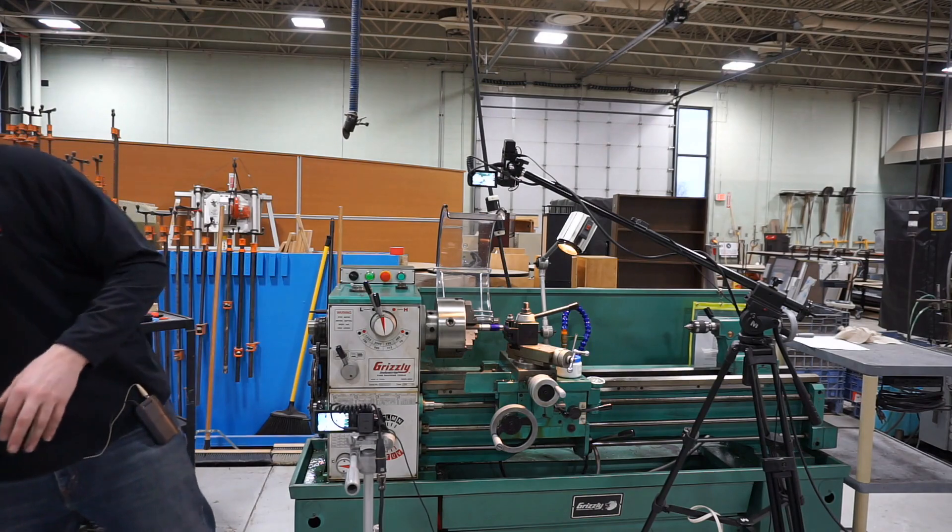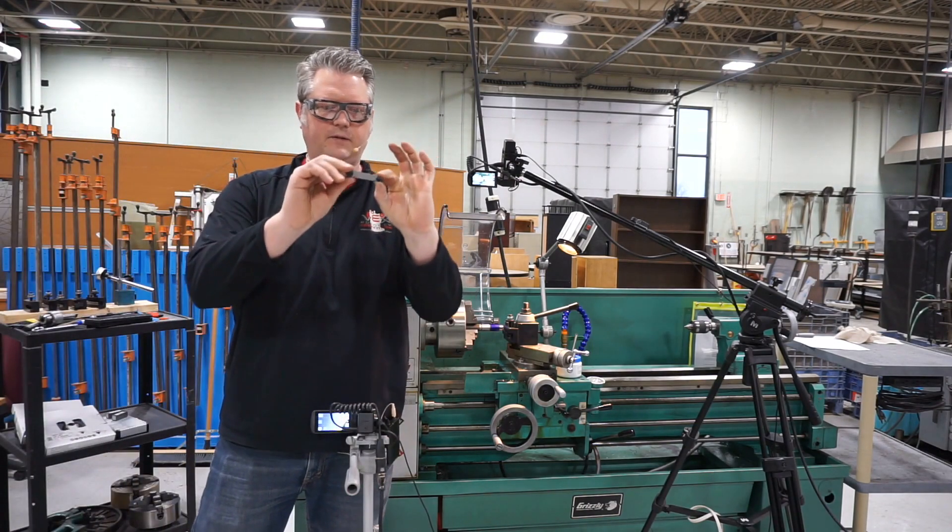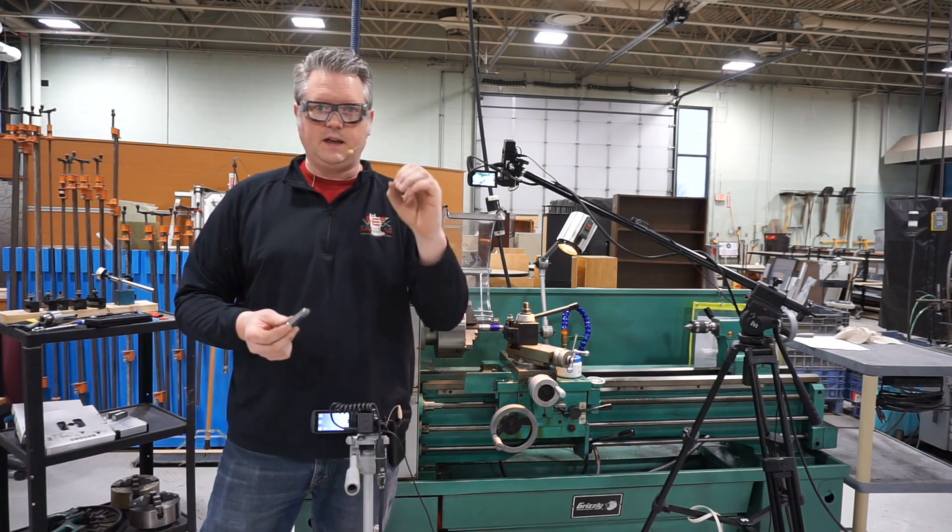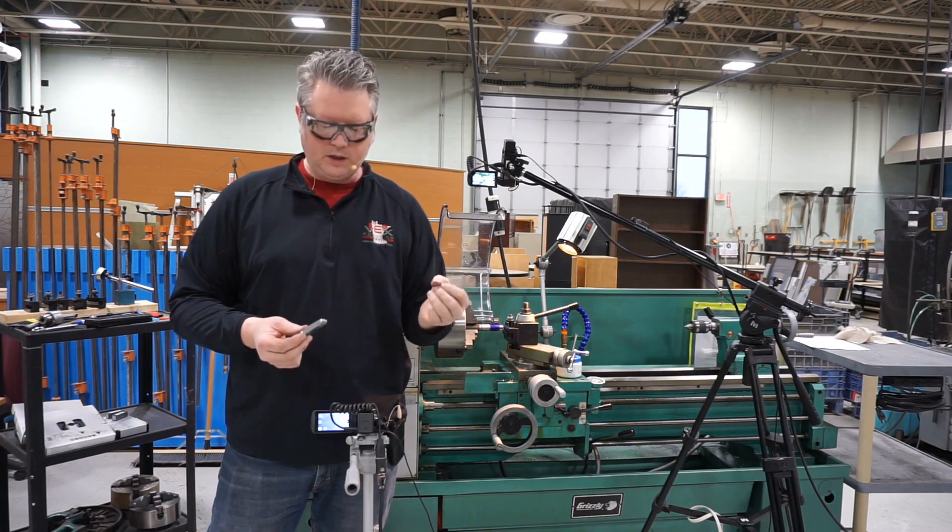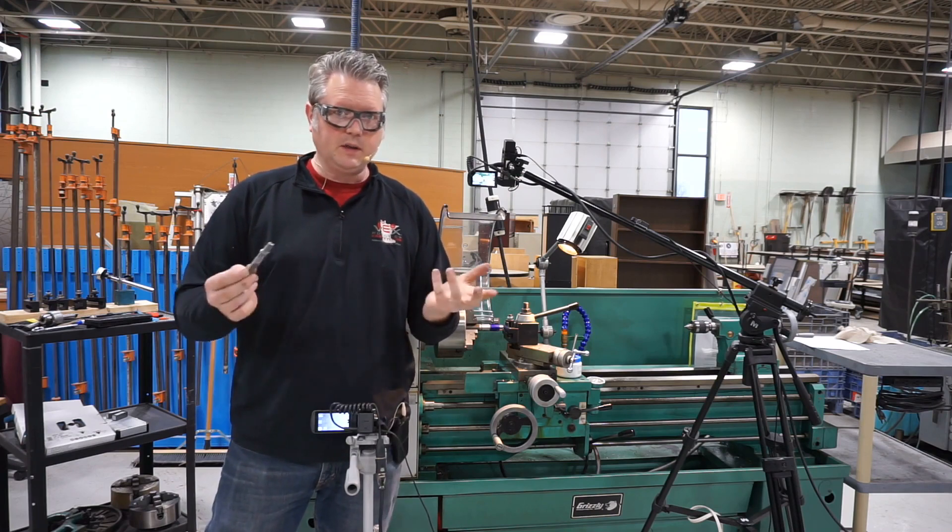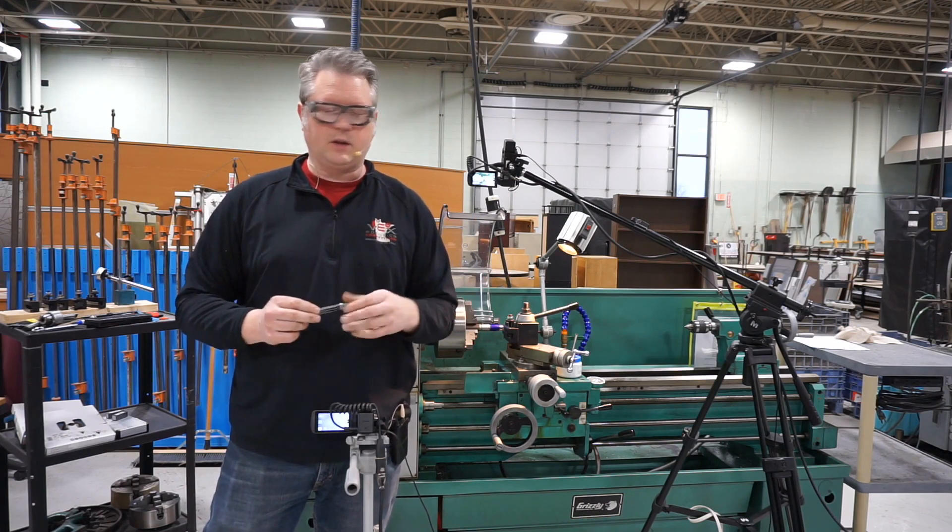So I've measured it using my little thread gauge here and found out that it's a 1mm, and the outside diameter is 25mm, and the thread pitch is 1 thread per millimeter. So it's a 25 by 1 metric thread.